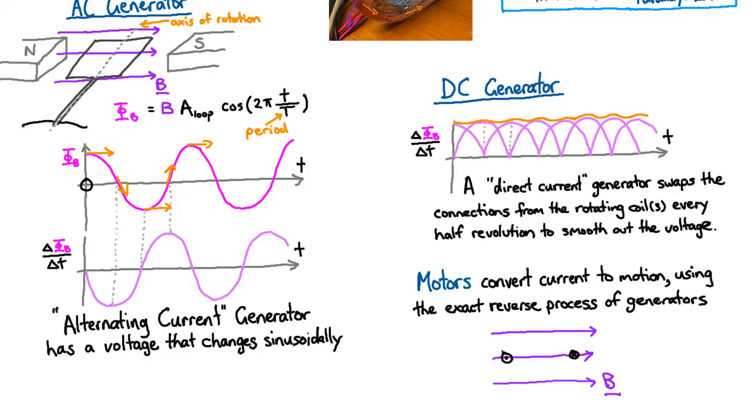So the current is going to be coming out of the screen here and into the screen there. It's going to be the same current because it's going around that coil. And we can see that there's going to be a magnetic force on it. So we're going to use the right hand rule to try and figure out the direction of that force. And so we'll do that one first on the left.